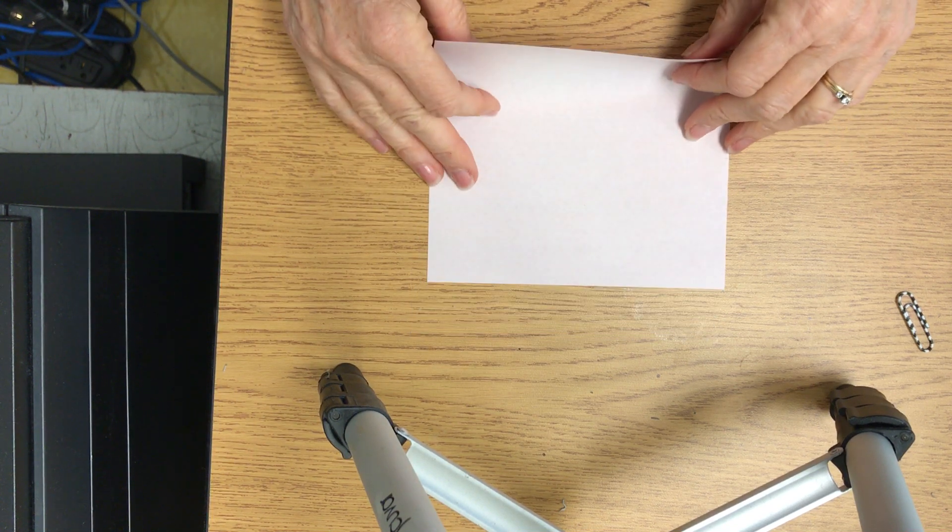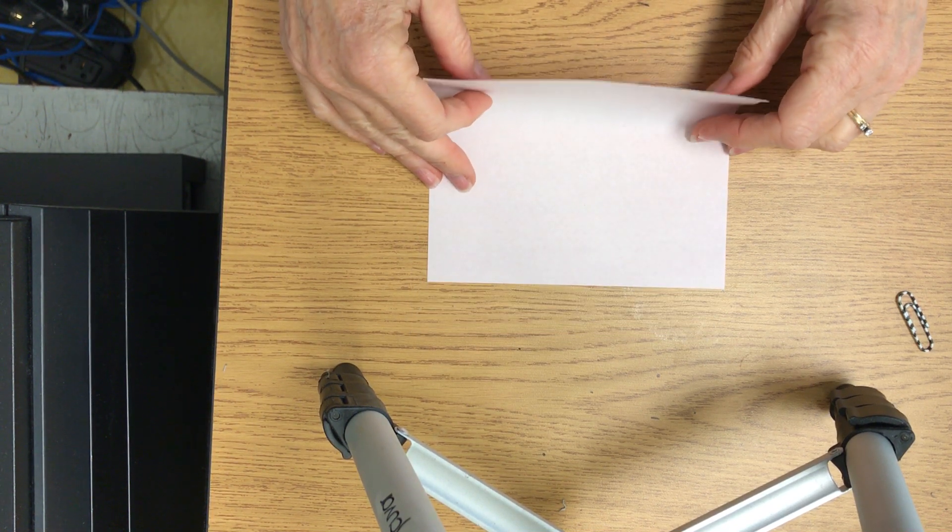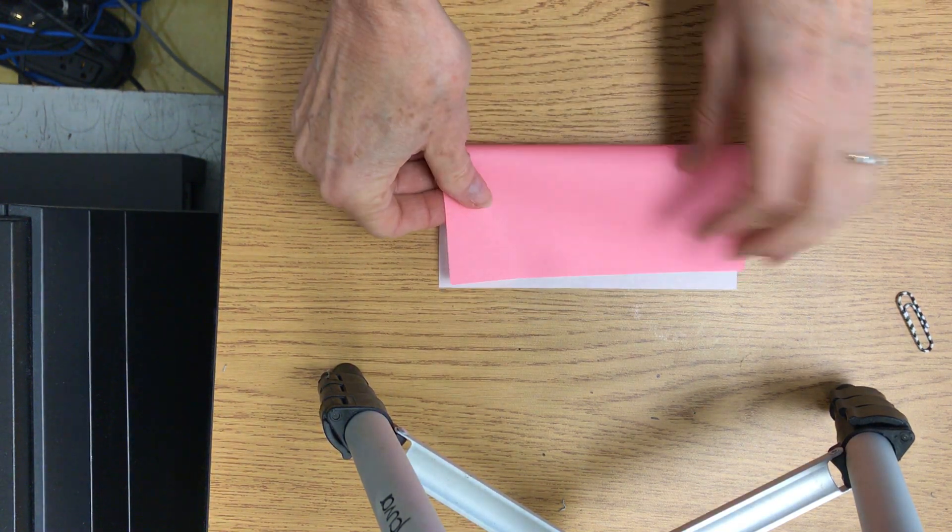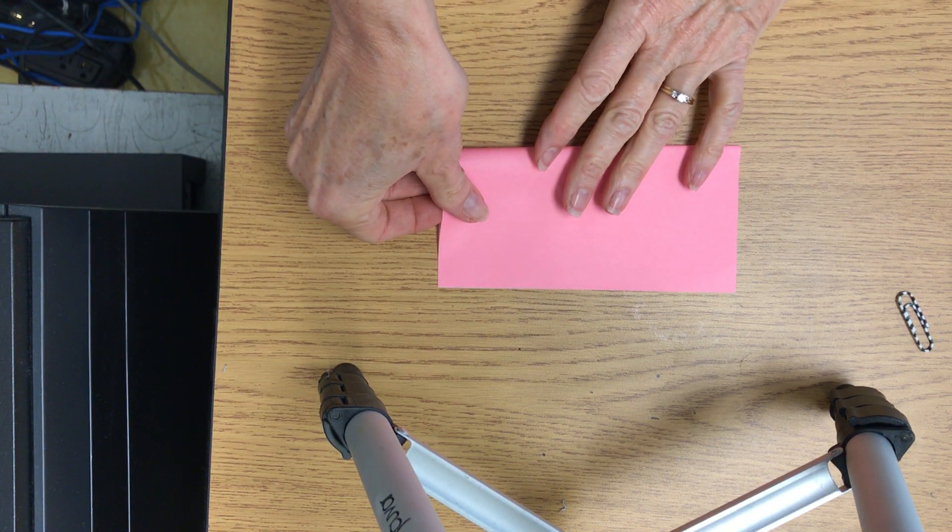All right, so here's how you fold one of the sections for the origami cube. We're going to take our paper and fold it in half. You have to be very exact with origami.